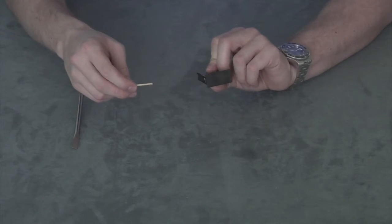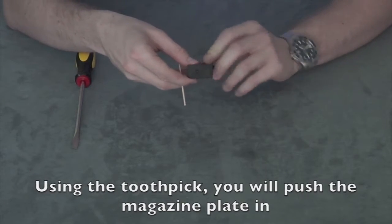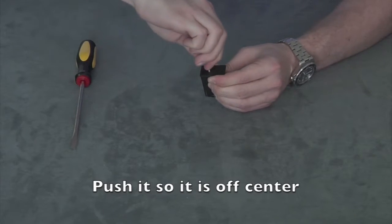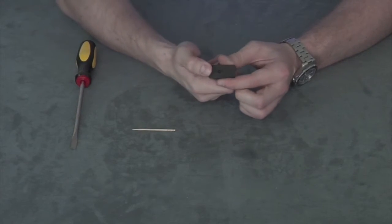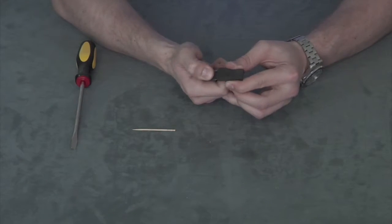Using the toothpick you will need to push in the magazine plate. Push it in and make it off center. When sliding the base off, keep your thumb in place to hold the spring.